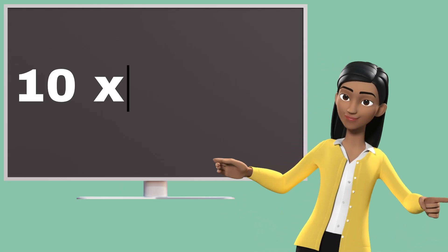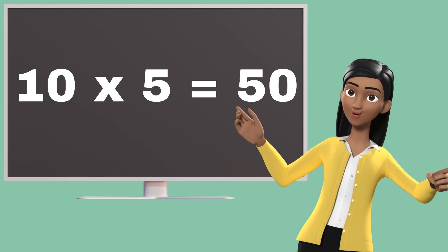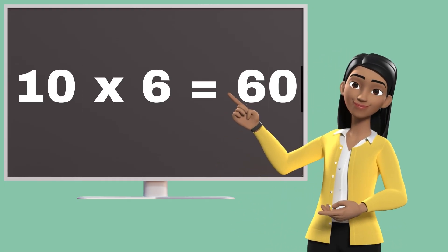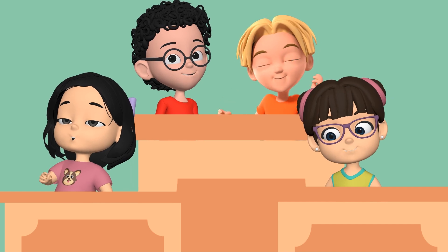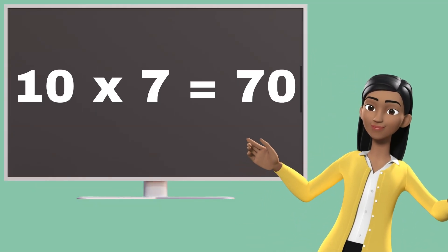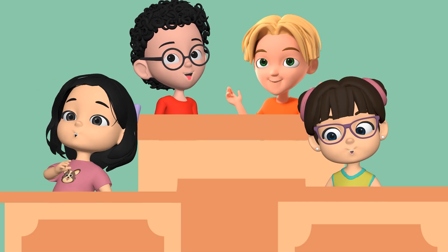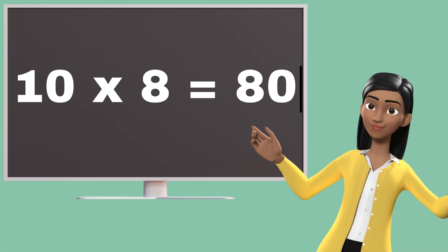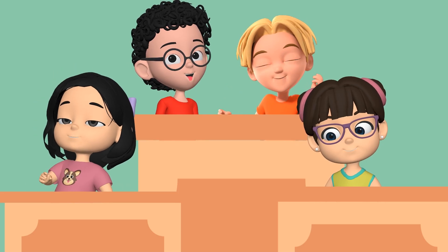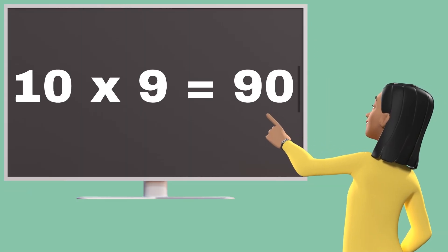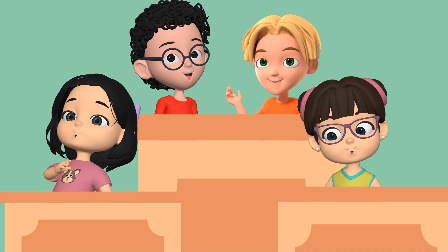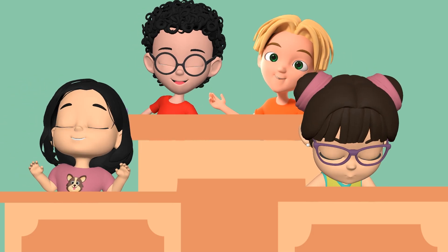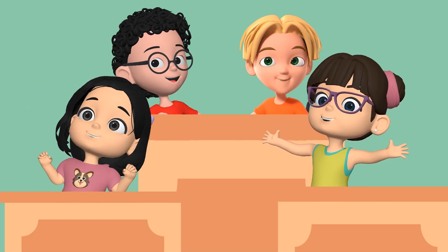Ten fives are fifty. Ten fives are fifty. Ten sixes are sixty. Ten sixes are sixty. Ten sevens are seventy. Ten sevens are seventy. Ten eights are eighty. Ten nines are ninety. Ten nines are ninety. Ten tens are one hundred. Ten tens are one hundred.